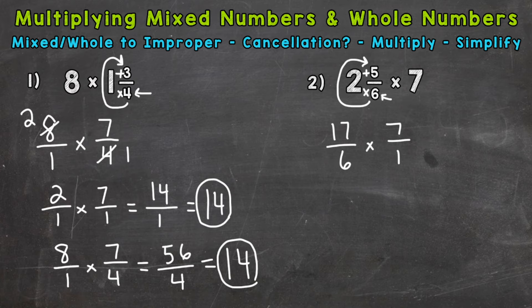Now, let's see if we can use any cancellation in order to simplify this problem before multiplying. So check to see if we have any common factors between the numerators and denominators other than 1. But in the case of number 2, the only common factors we have between 6 and 7, 17, and 1 is 1. So we cannot use cancellation.